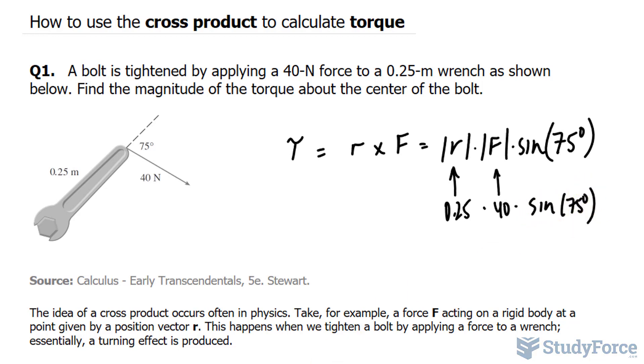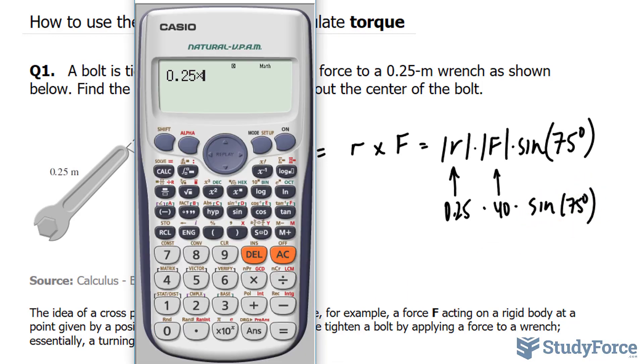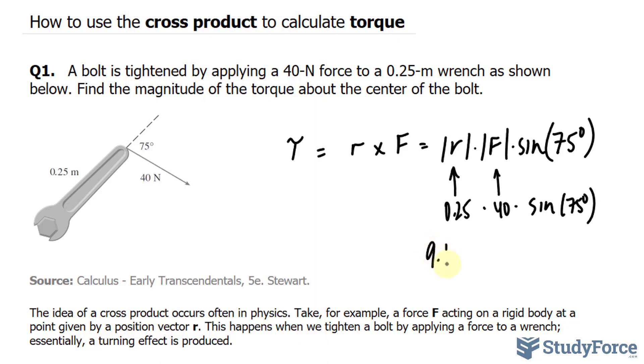Now we'll use our calculator. We have 0.25 times 40 times sine of 75. Make sure that your calculator is in degrees. And we should end up with 9.65. And we're not taking into account significant figures here, so we'll just stop at 3. And this number here represents the magnitude of the torque. And since we're dealing with newtons and meters, the units here are in joules.